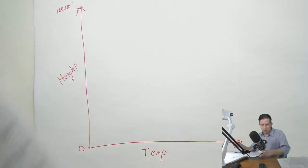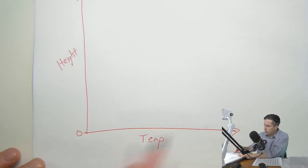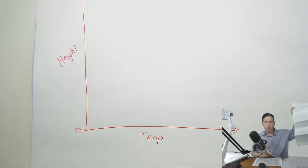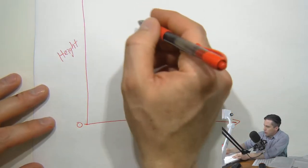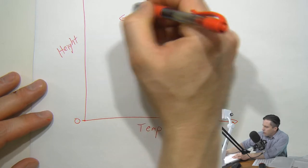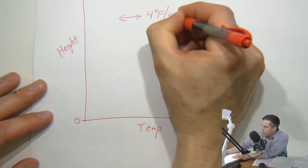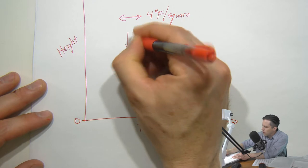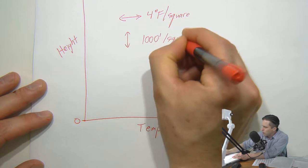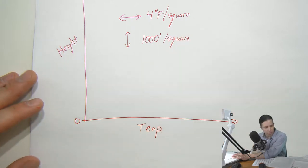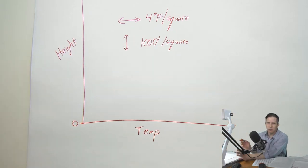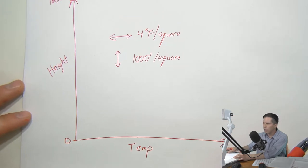Depending on the graph paper, you'll have to come up with a scale that fits. With the three sheets taped together using engineering paper, what we came up with is that each horizontal increment is about four degrees Fahrenheit per square, and vertically, 1,000 feet per square. So with my setup with the three sheets taped together, it fits. But you're probably using different paper and may need a slightly different scale.